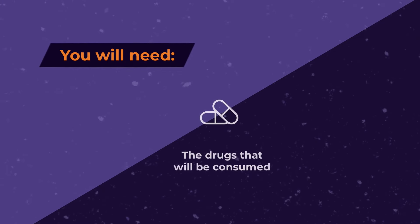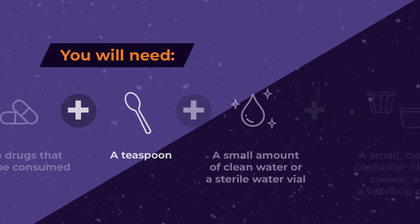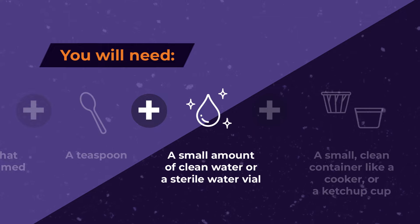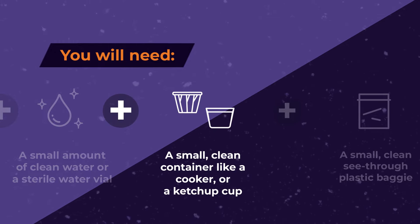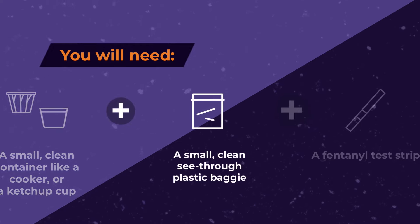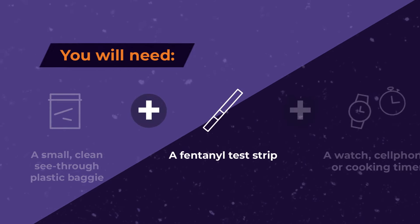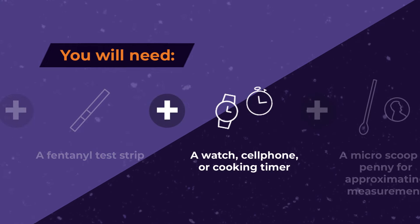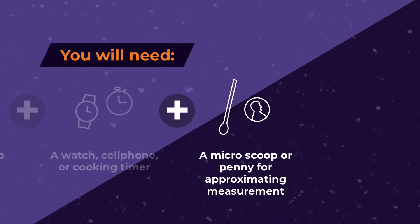You will need: the drugs that will be consumed, a teaspoon, a small amount of clean water or a sterile water vial, a small clean container like a cooker or a ketchup cup, a small clean see-through plastic baggie, a fentanyl test strip, a watch, cell phone, or cooking timer, and a micro scoop or penny for approximating measurement.